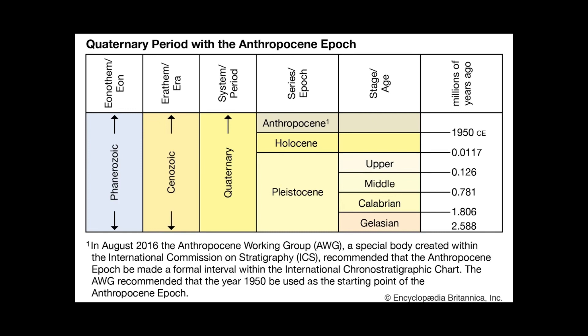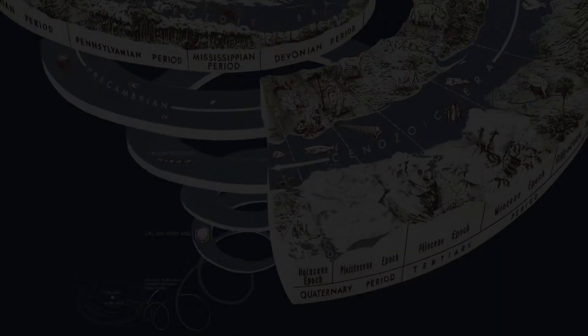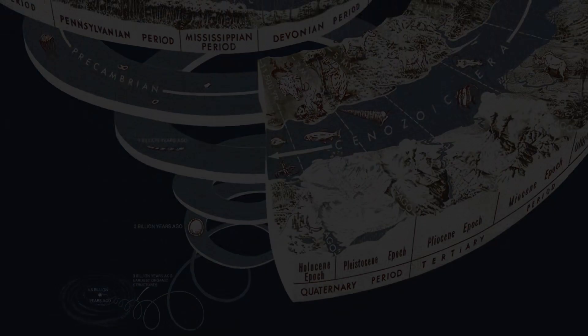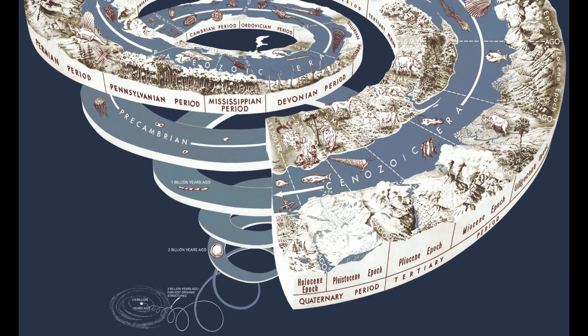The Holocene began approximately 11,500 years ago after the last glacial period peaked and deglaciation started, and it continues to the present. In my previous video about the LGM — the Last Glacial Maximum — I talked about that, and you can refer to it for more context. In general, the Holocene follows the Pleistocene; together these form the Quaternary period in our geological timescale.